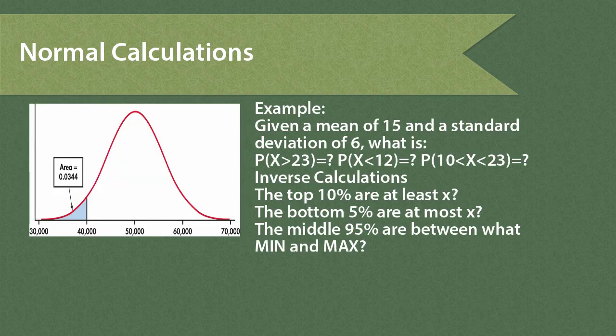Let's look at an example. Say we're working with a variable and we're told we can assume the population follows a normal distribution. We're given the mean of 15 and the standard deviation of 6. We're going to calculate the probability that our variable will be greater than 23, less than 12, and between 10 and 23. And we'll do the following inverse calculations: the top 10% are at least what value, the bottom 5% are at most what value, and the middle 95% of all values are between what minimum and maximum.